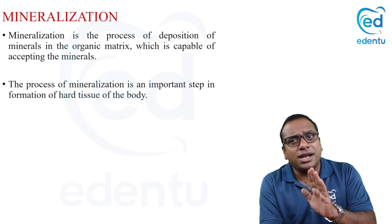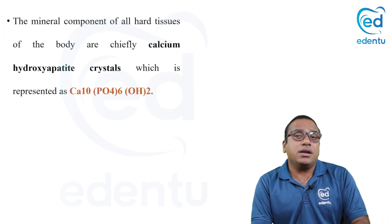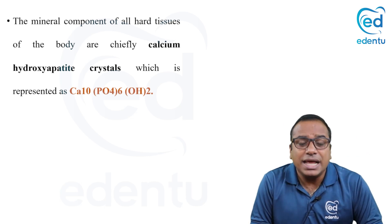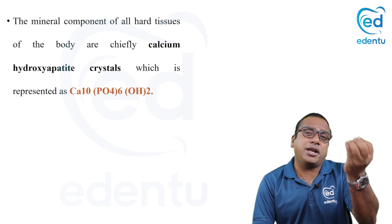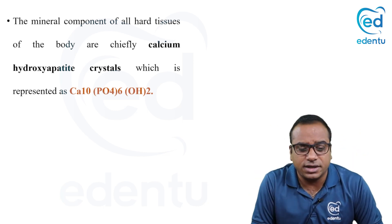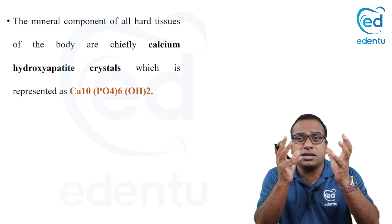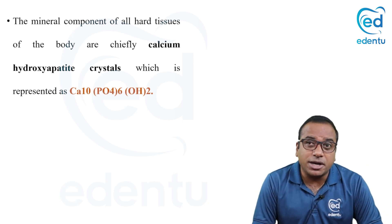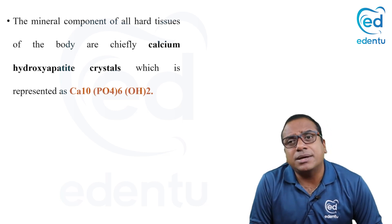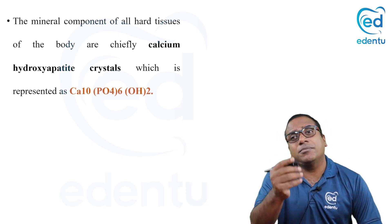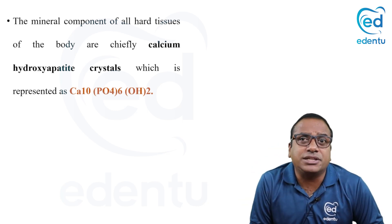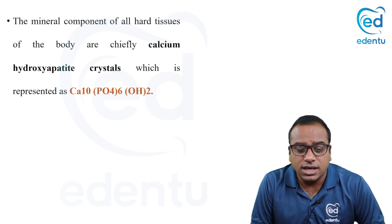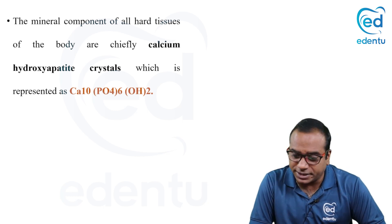Basically, mineralization means minerals. The most important mineral component for hard tissue formation is calcium hydroxyapatite crystals, which are made up of calcium and phosphate. The mineral component of all hard tissues of the body is chiefly calcium hydroxyapatite. Sometimes in exams they may ask you to write this formula: CA10(PO4)6(OH)2 — this is your calcium hydroxyapatite.